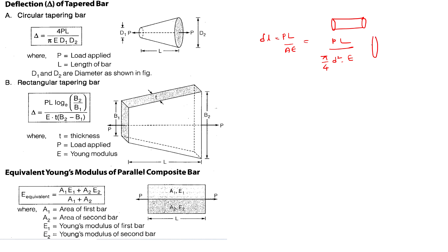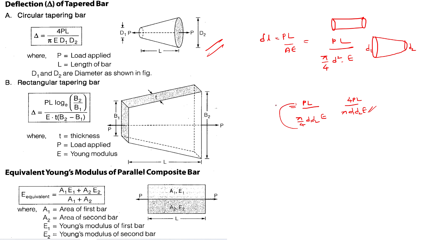For a tapered bar with diameters D1 and D2: delta L = 4PL / (π·D1·D2·E). For a rectangular tapered bar: delta L = P·L·log(b2/b1) / (E·thickness·(b2−b1)).